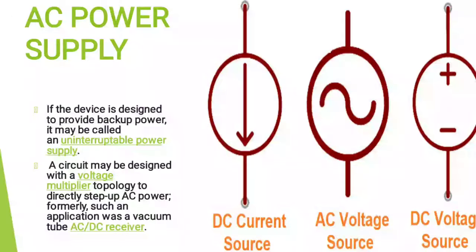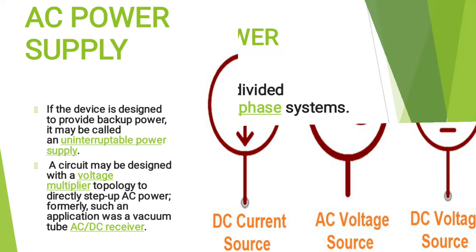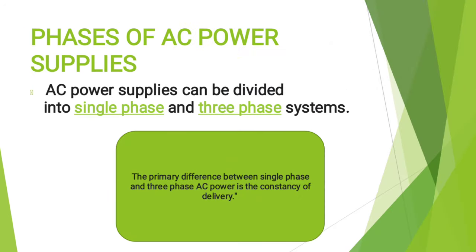Furthermore, if the device is designed to provide backup power, it may be called an uninterruptible power supply. A circuit may be designed with voltage multiplier topology to directly step up AC power; formerly, such applications were vacuum tube AC or DC receivers. AC power supplies can be divided into single phase and three phase systems. The primary difference between single phase and three phase AC power is the consistency of delivery.